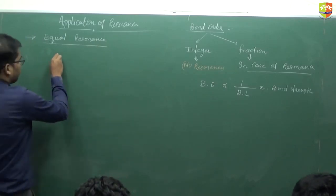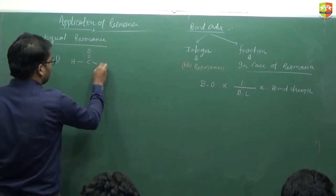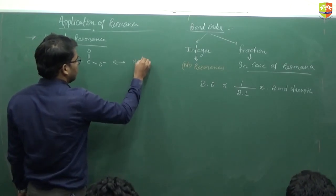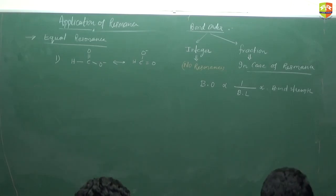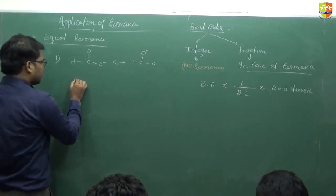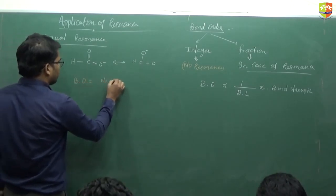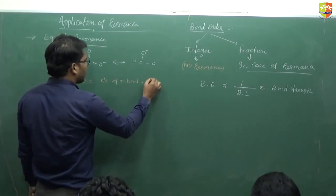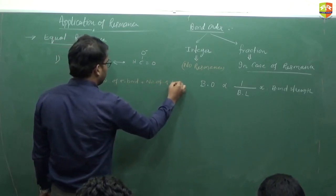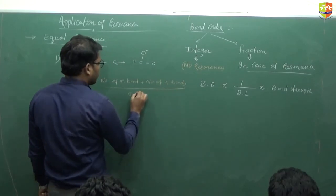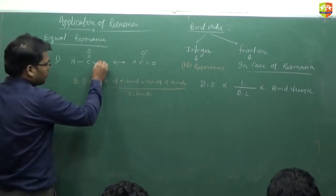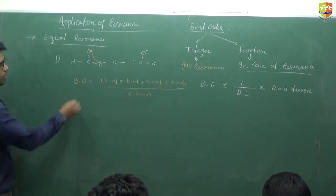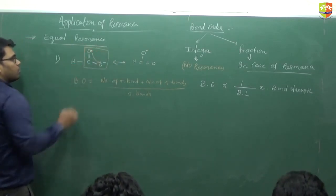For example, consider N=O with O⁻, and its resonating structure is N-O⁻=O. The bond order formula in this case is: number of sigma bonds plus number of pi bonds, divided by number of sigma bonds. We will count the sigma bonds and pi bonds only in the part where resonance is possible — from this oxygen to this oxygen.